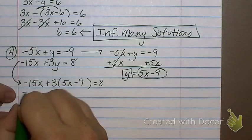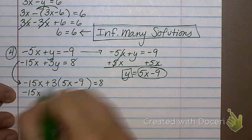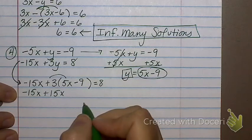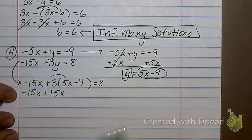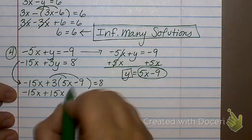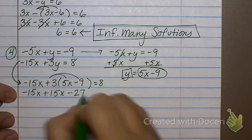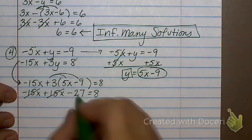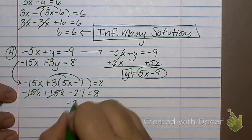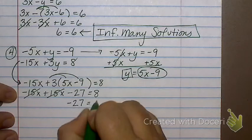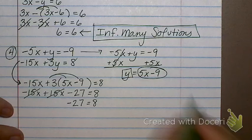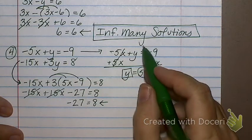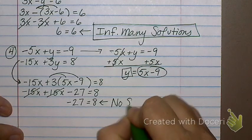So negative 15x plus 15x. Uh-oh. Does that mean it's infinitely many? Because those two cancel. No. Not necessarily. 3 times negative 9 is negative 27 equals 8. Yes, my 15 and my negative 15 cancel out. But look at what's left. I have negative 27 on the left and 8 on the right. That is not a true statement, is it? No. Which means I don't have infinitely many. I have no solution.